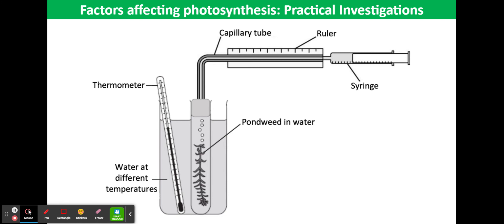The slide in front of you shows a photosynthometer, also known as an Audus microbiorette. It is set up so that it is airtight and there are no air bubbles in the capillary tube. As the experimenter manipulates the syringe, the gas bubble can be moved into the part of the capillary tube against the scale and its length measured. If the radius of the capillary tube is known, then this length can be converted to volume.